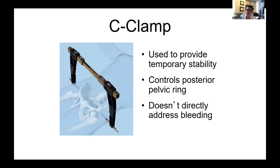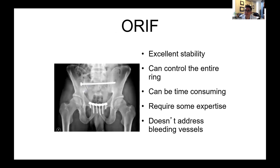A C-clamp is a tool used to reduce the posterior pelvis. It's a little trickier to use and can be dangerous — you need fluoroscopy to put it on safely. Basically it's a clamp that pins the sacroiliac joints together and squeezes down the posterior pelvic ring. This is something we don't use very often but can be a useful tool for injuries that are really displaced in the back. ORIF takes a little more time, but clamping and plating the anterior pelvis can be done fairly quickly — it definitely addresses stability, but in an unstable patient, you probably don't want to do this.